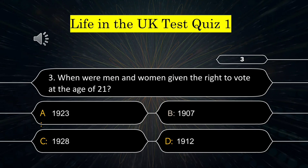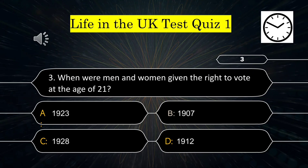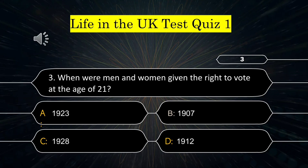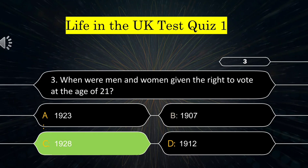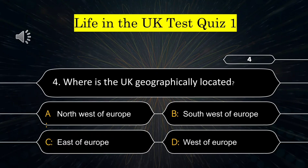Question number 3: When were men and women given the right to vote at the age of 21? Your options are: A) 1923, B) 1928, C) 1912, or D) 1907. The correct answer is 1928.